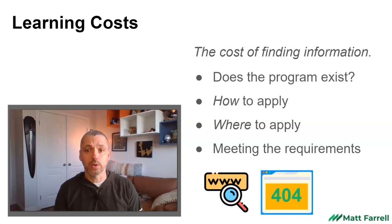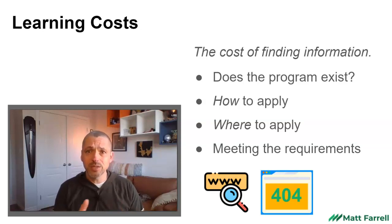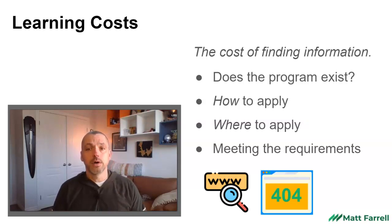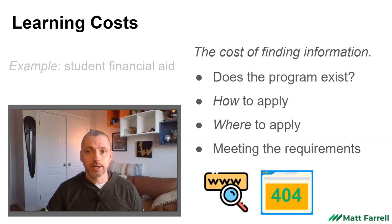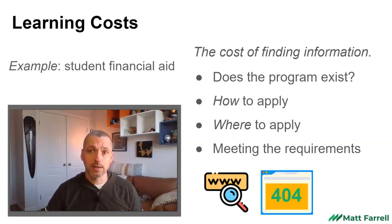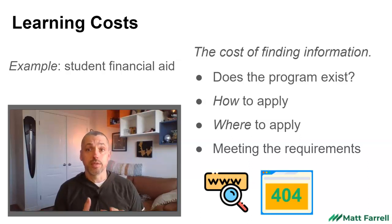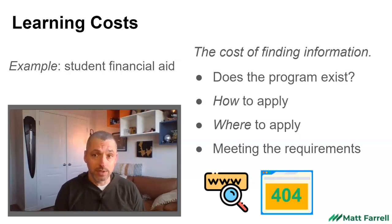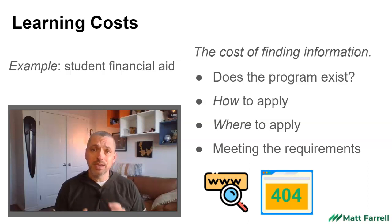There are cases where you might look for a program, search for it, and it could be difficult to find — maybe it's not prominent on the government website. These are all aspects of learning costs. A great example would be things like student financial aid and student loans. They aren't always widely publicized, people don't know whether they qualify or not, they don't know what the requirements are, and the applications can be kind of ambiguous and tough to figure out.